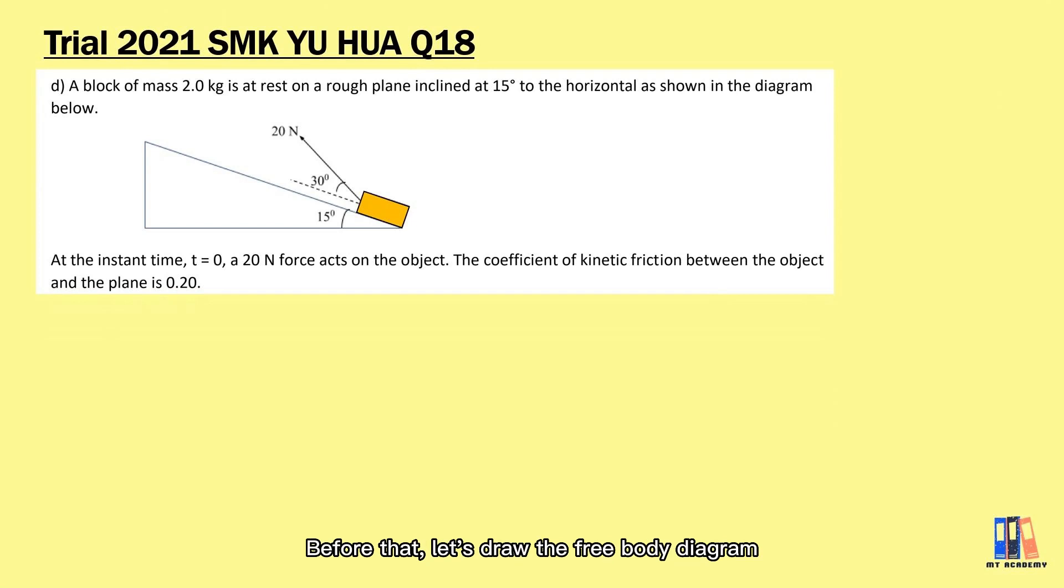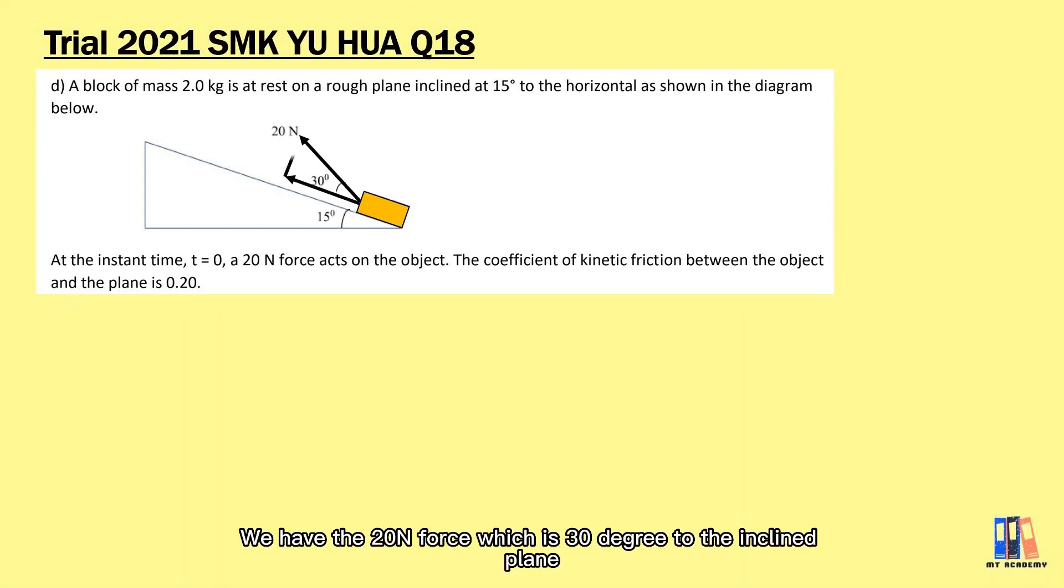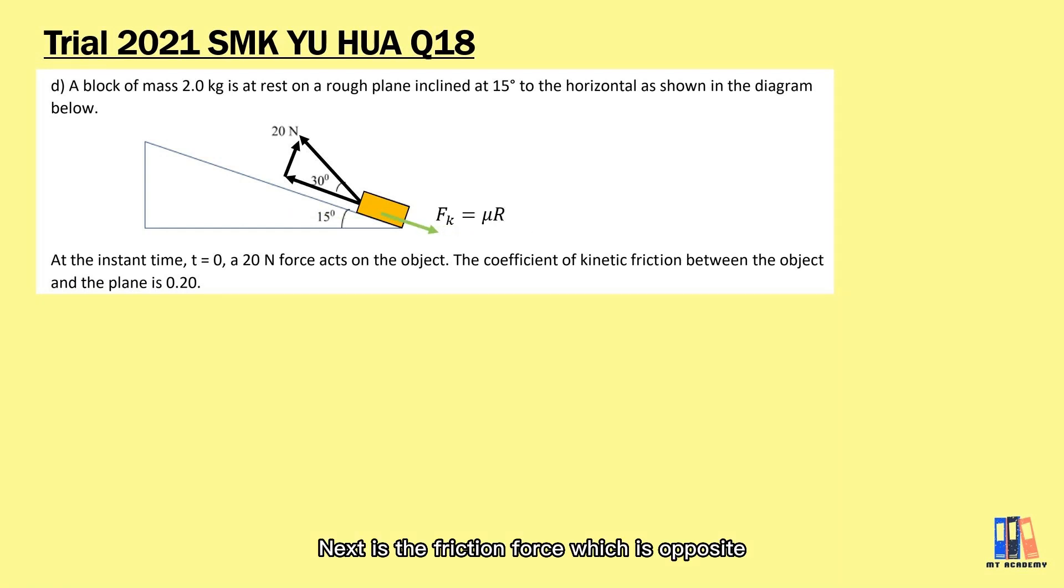We have the 20 newton force which is 30 degrees to the inclined plane. Here I suggest to split the force into two components that is parallel and perpendicular to the plane surface. Next is the friction force which is opposite to the motion of object. And then is the weight of the object which is always downward, so split it into those two components also. Lastly is the reaction force which is always normal to the contact surface.